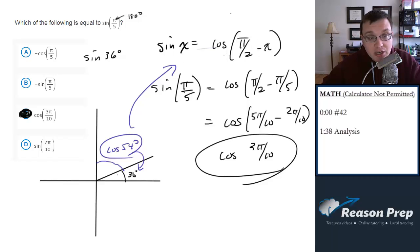So the cofunction identity is good. Knowing the relationship between sines and cosines works. But this is a hard question. We'll have to see how the SAT handles trig questions - if it's going to be memorizing relationships, formulas, and identities.